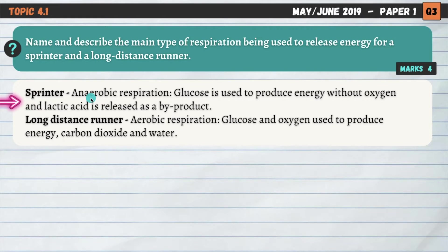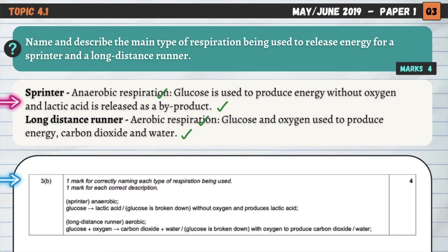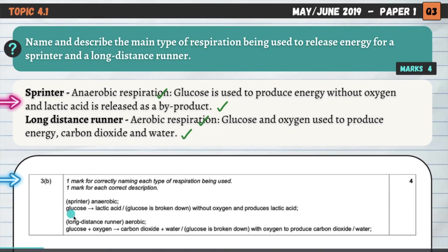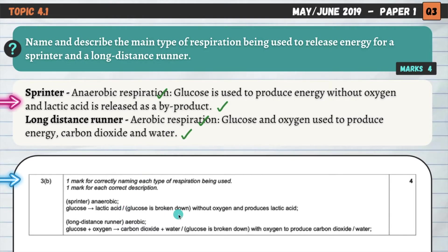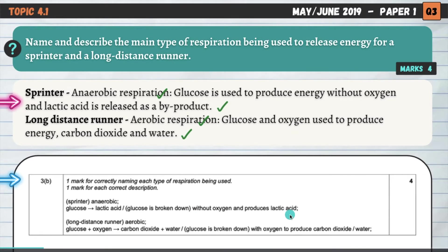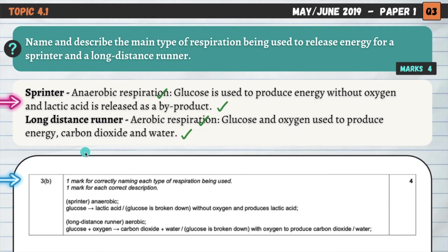A sprinter relies predominantly on anaerobic respiration. Anaerobic respiration: glucose is used to produce energy without oxygen, and lactic acid is released as a byproduct. For the sprinter, it's anaerobic — you get one mark for correctly naming the type of respiration. Our description could be the equation: glucose gets converted into lactic acid. So glucose is broken down without oxygen and produces lactic acid. Those are the main components of anaerobic respiration.